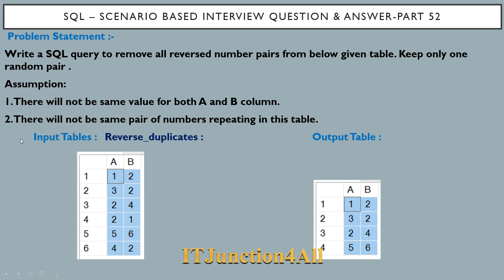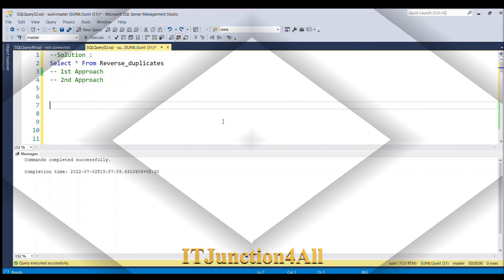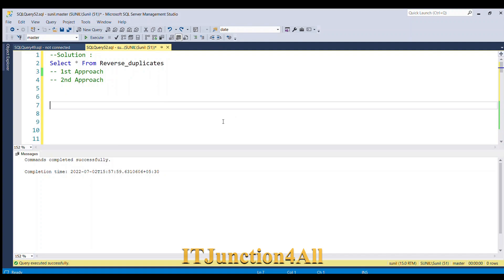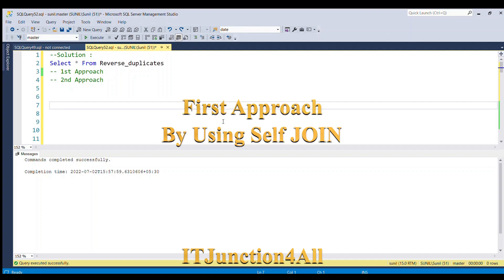The second assumption is that there will not be the same pair of numbers repeating in this table — so 1,2 will not appear multiple times, and 3,2 will not repeat either. We have to solve this problem keeping these two assumptions in mind. In SQL Server there are multiple ways to solve this, but in this video I am going to discuss two approaches.